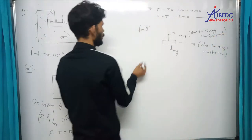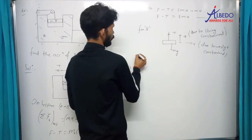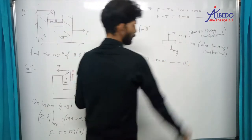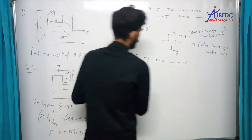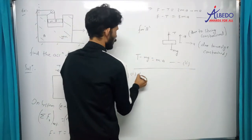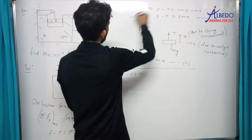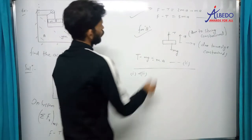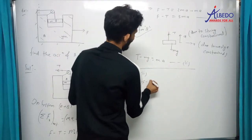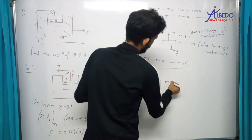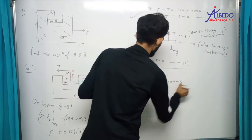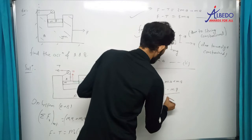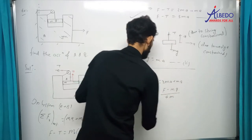Vertical में लिखिए: T minus mg equals to mass into acceleration. Equation 1 and 2 को add करो — simplify करना अलग बात है, ये दोनों चीज़ें लिखनी आनी चाहिए. Tension से tension cancel हो रहा है: F minus mg equals to 3ma plus ma. So a की value = (F minus mg) by 4m. That's all, a आ गया.